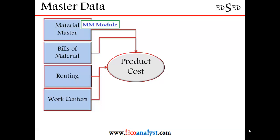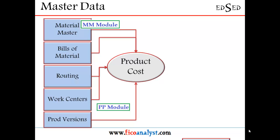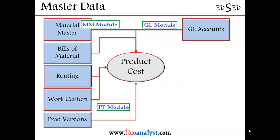All three elements — bills of materials, routing, and work centers — as well as production version, are part of the PP module. If you have more than one variation of production, you maintain a production version. The combination of bills of materials and routing is what we call a production version.